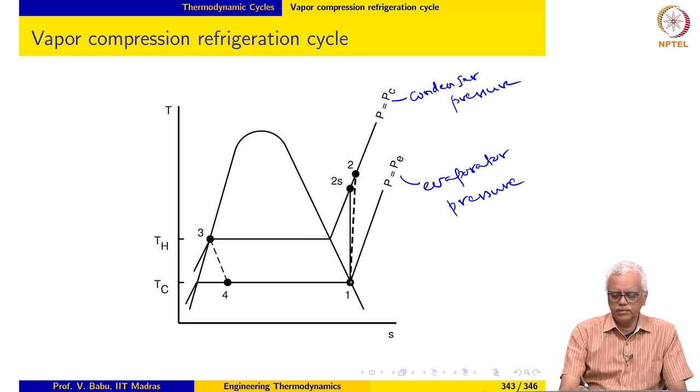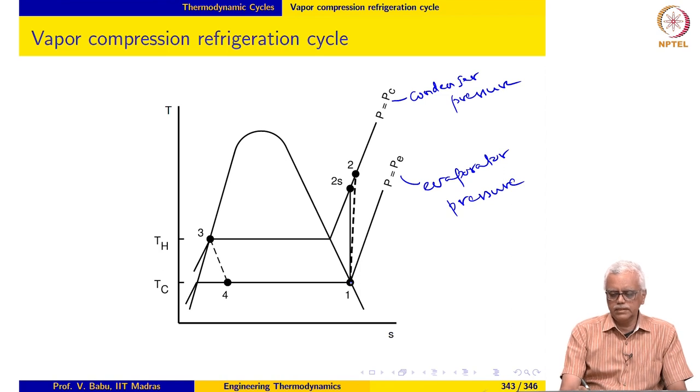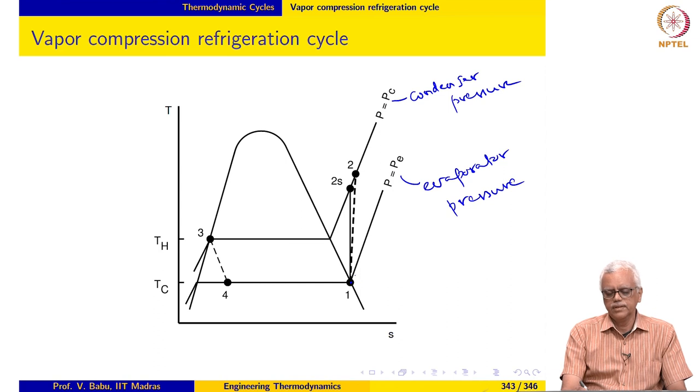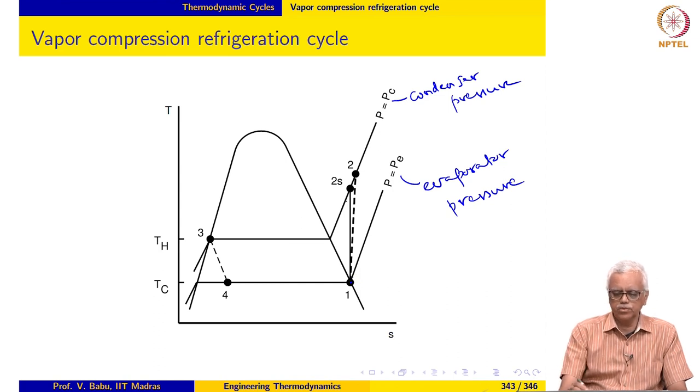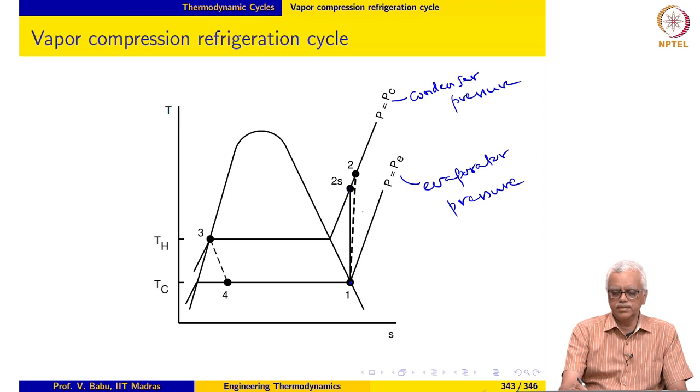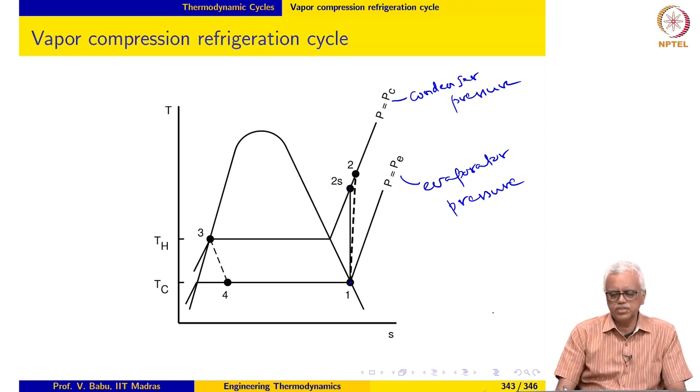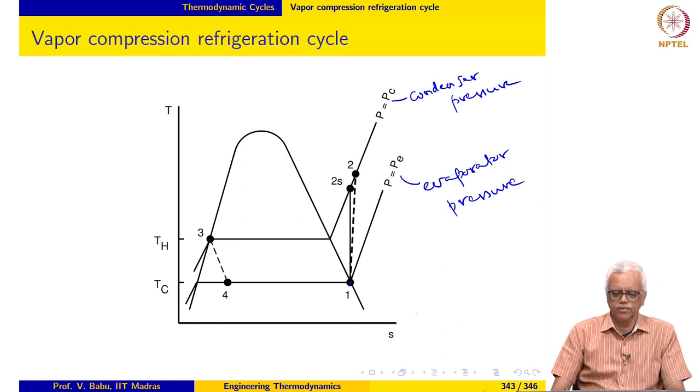We take this to be the starting point of the cycle state 1. Here the refrigerant as you can see is a saturated vapor and it is compressed from the evaporator pressure to the condenser pressure. In the case of an ideal process, we end up at state 2s. In an actual process which is adiabatic but with internal irreversibilities, we will end up at state 2.